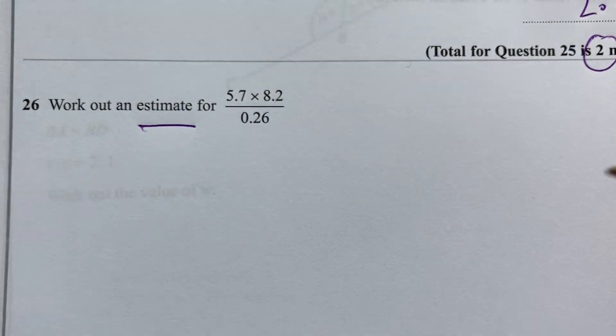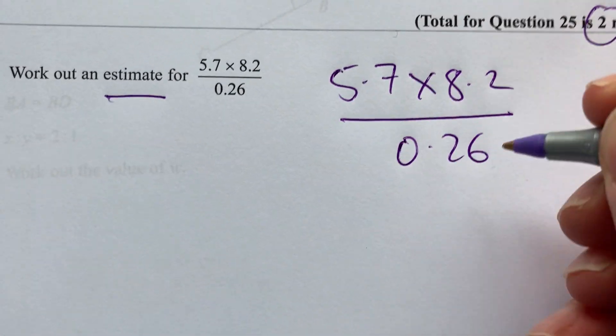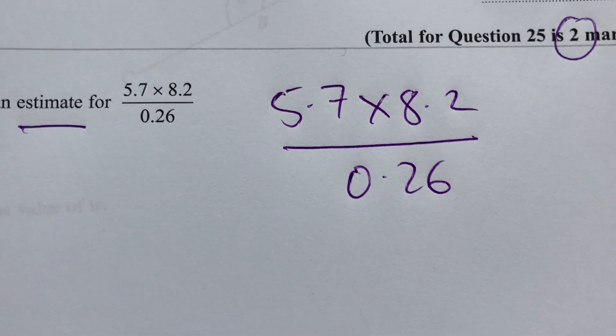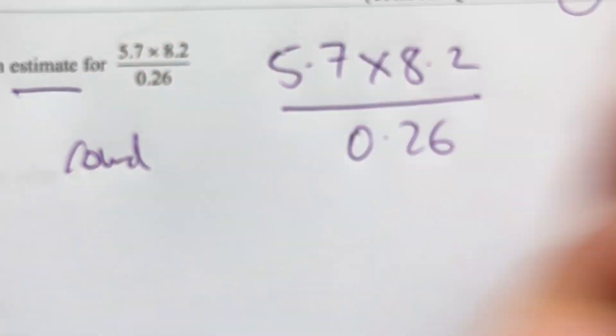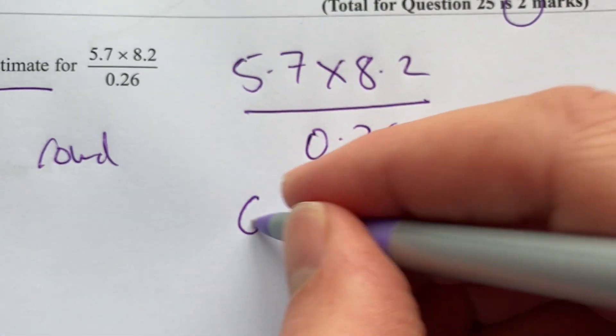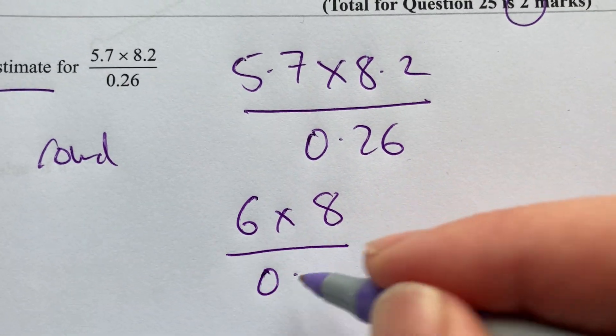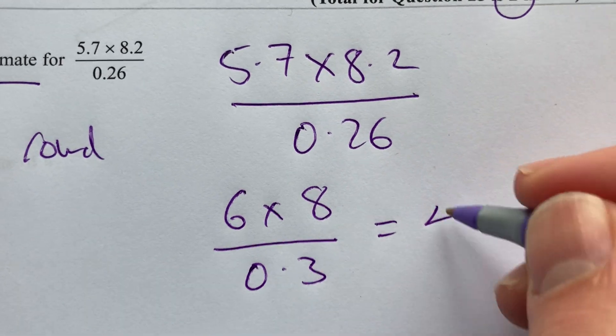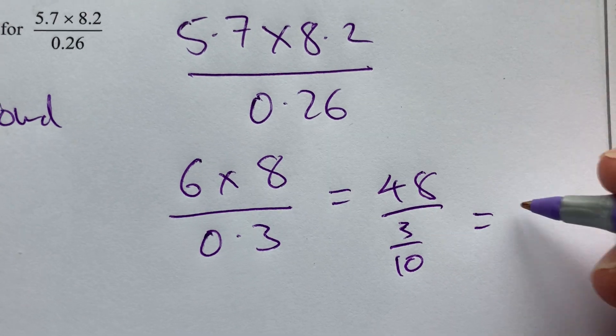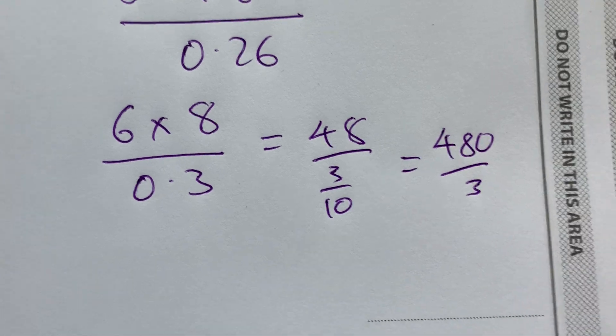Question 26. Work out an estimate for 5.7 times 8.2 over 0.26. Have a look at my other videos about estimating. What you really need to do is round to nearest whole number or something like that. So 5.7 is close to 6. 8.2 is close to 8, and I'll divide that by 0.3. So I'm going to do 48 divided by 3 tenths.